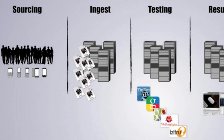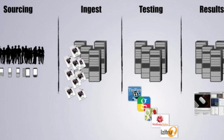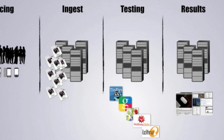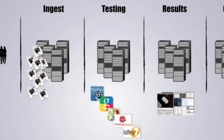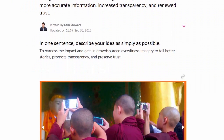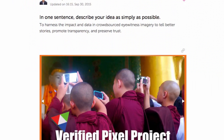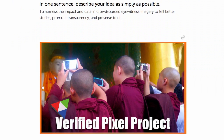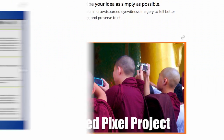The project is a Knight-funded prototype grant to do automated image analysis to help verify pictures sent to newsrooms. The idea is how can newsrooms capitalize on user-generated content in a less risky way through basically automation of image and metadata.